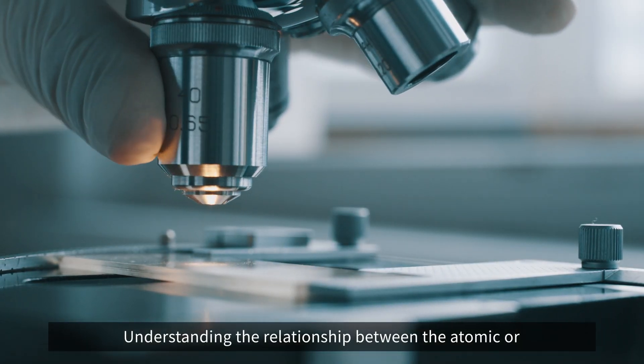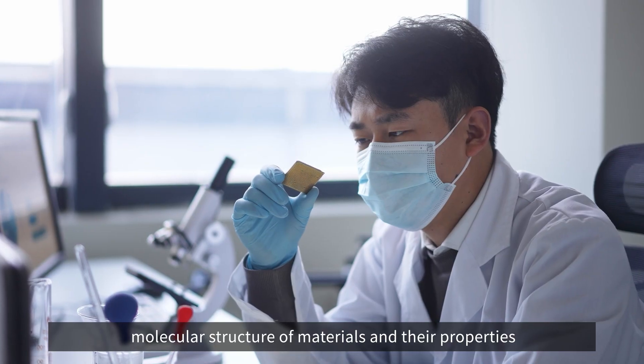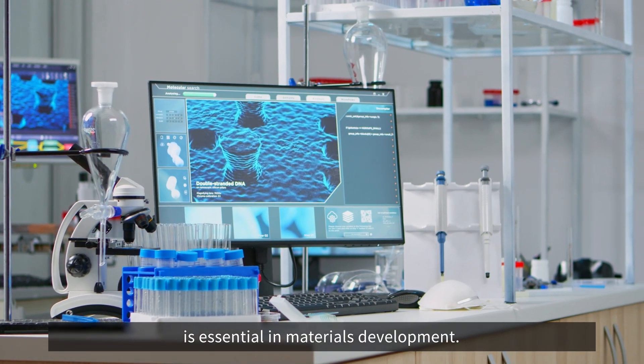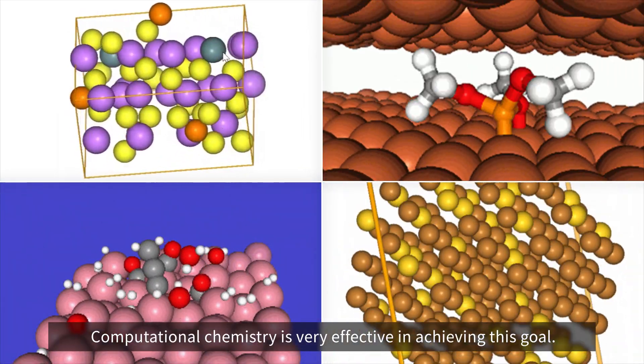Understanding the relationship between the atomic or molecular structure of materials and their properties is essential in materials development. Computational chemistry is very effective in achieving this goal.